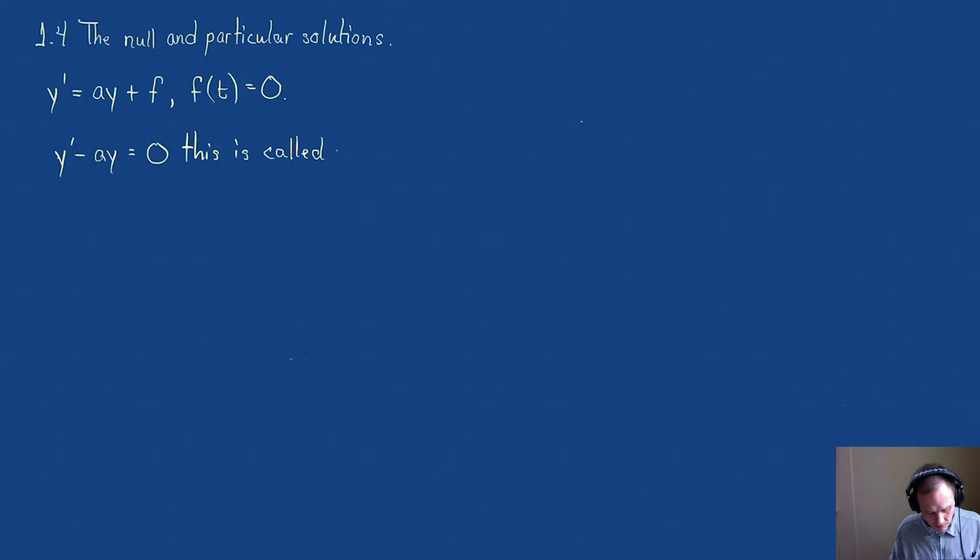This is called the homogeneous or null equation. Now this is maybe the first time that you've seen it officially called a homogeneous or a null solution, but this actually occurs more than you might initially think.